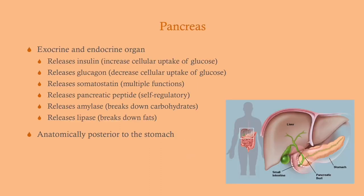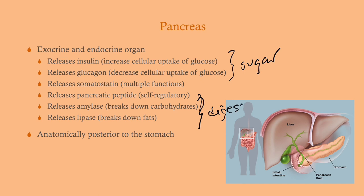This is just a brief review of the functions of the pancreas, which are manifold. Remember that the pancreas is both an exocrine and an endocrine organ. It serves two major purposes: one is to regulate sugar, and the other is to aid in digestion. We'll see both of those come up particularly when we talk about chronic pancreatitis.